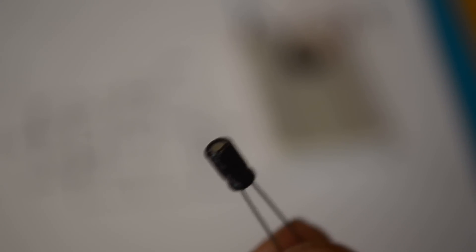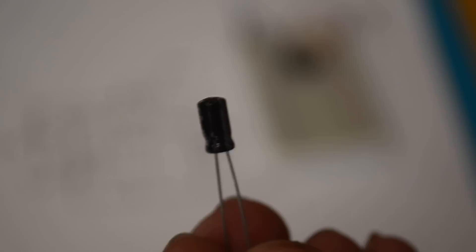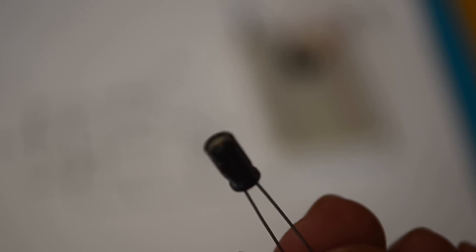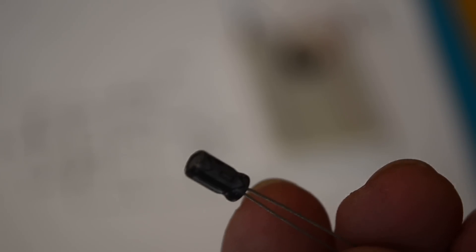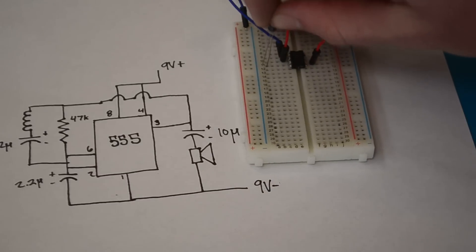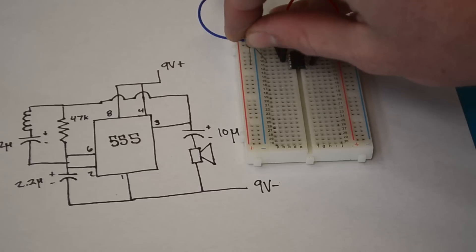Now from pin 2 I'm going to connect up this 2.2 microfarad capacitor. As you can see, one side of the capacitor has these negative symbols on it. And so you're going to want to make sure you connect up the positive side and the negative side facing correctly. I'm going to have the positive side connected to pin 2 and the negative side connected to the negative rail.